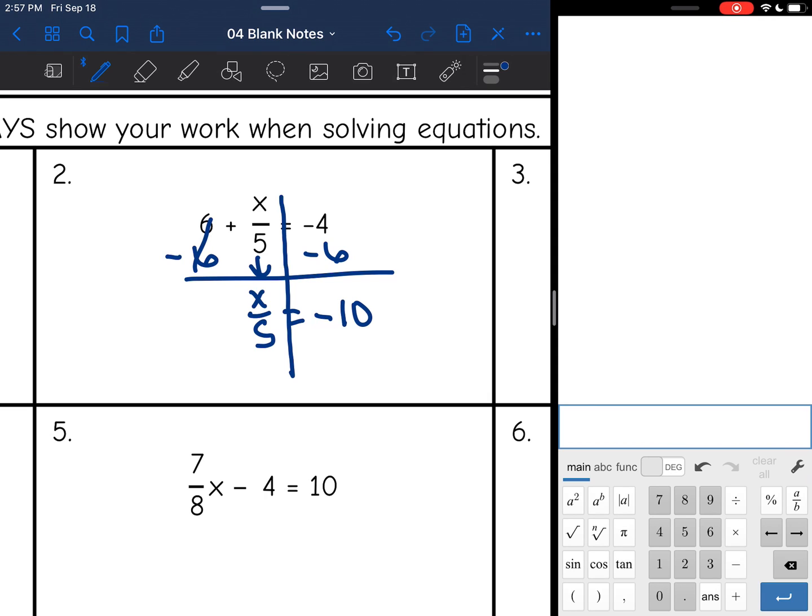Okay, now x is being divided by 5 right here. So I need to undo that dividing by 5 by multiplying by 5. And now x is isolated, and negative 10 times 5 is negative 50, so x is negative 50.